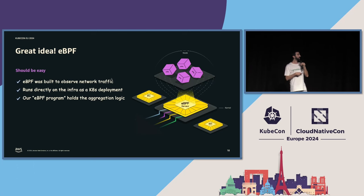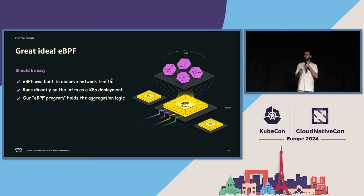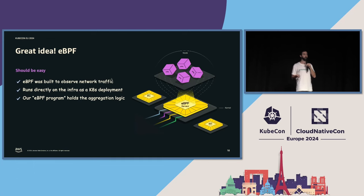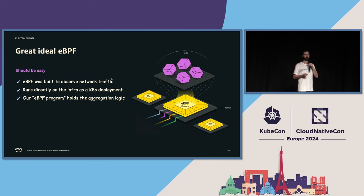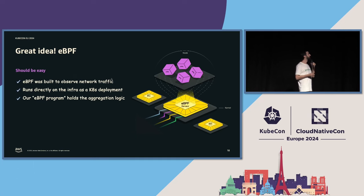eBPF was built to observe network traffic — it's an event-driven system built to observe situations like network receive and send. It runs directly on the Kubernetes deployment as a Kubernetes-aware sensor, and we can put logic for aggregation or whatever we want to achieve into eBPF programs. That sounds like a solution to every problem with VPC flow logs and cloud metrics.